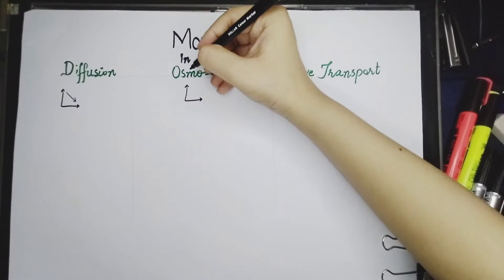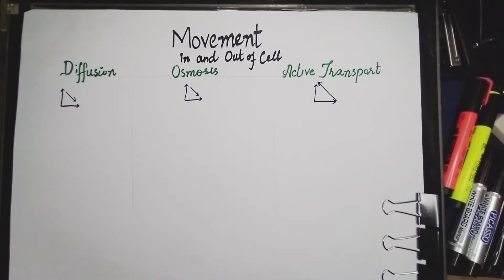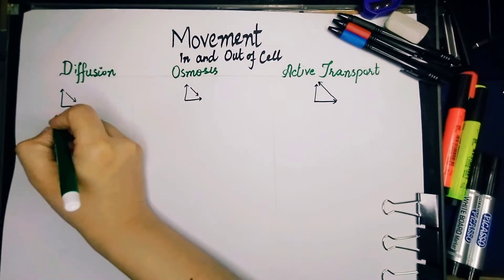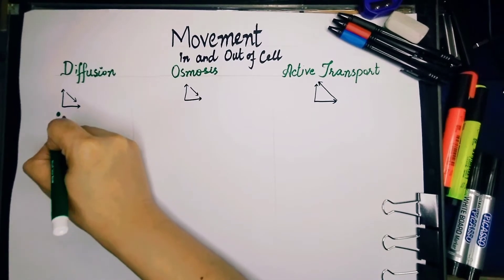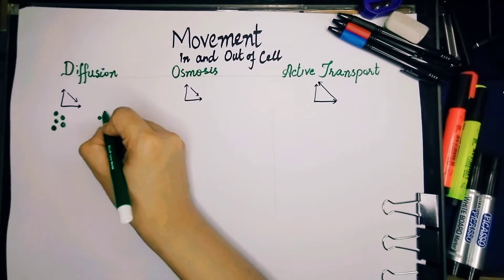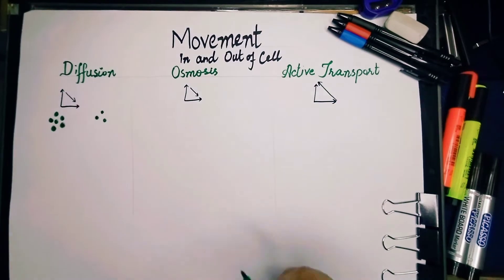So let's start with the very first type. You can see how we are drawing the arrow downwards in the first two and in the third, the arrow is moving upwards, which means that the downward arrow represents that it is towards the concentration gradient, whereas the upward arrow represents against the concentration gradient.